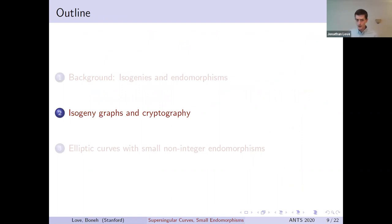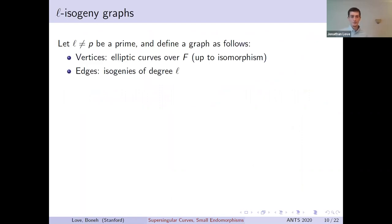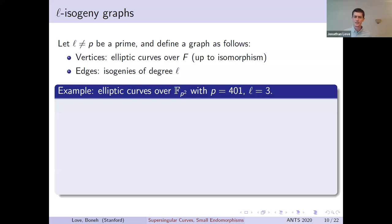Let's talk about isogeny graphs. Given a prime L, usually taken to be much smaller than P, we can define a graph structure on the set of elliptic curves over a given finite field by declaring two curves to have an edge between them if there is an isogeny of degree L from one to the other. Let's look at a specific example. We're going to set P to equal 401 and consider the set of all curves defined over F_P², connecting them by isogenies of degree 3.